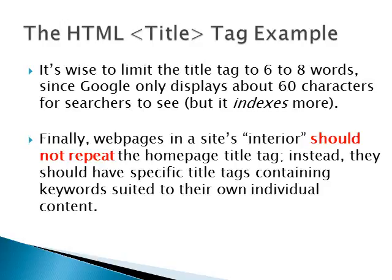As Google's robot spiders your website, it gets confused if it sees the same title tag over and over again, and we don't want to confuse that spider. So each webpage on the interior of your website — meaning webpages you go to from the homepage — needs to have its own specific title tag that contains the keyword or keywords suited to whatever its content is.